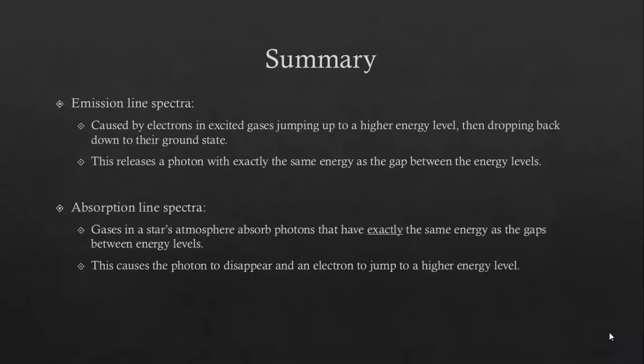Absorption line spectra are caused by the gases in a star's atmosphere absorbing photons with exactly the same energy as the gap between its energy levels. This causes the photon to disappear and an electron to jump up to a higher energy level.